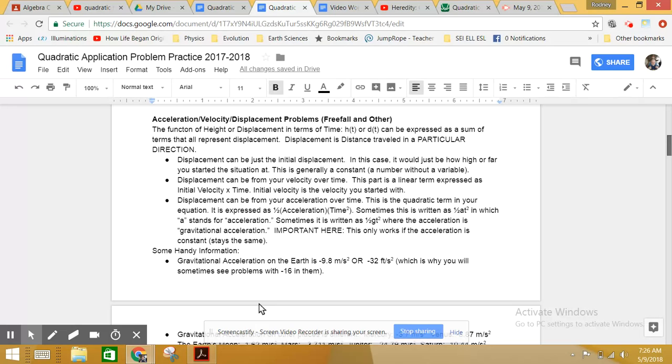You have information about a constant acceleration. With all that information, you can actually make a quadratic equation in which we combine all three parts: the acceleration part, the velocity part, and your initial distance or height part into an equation.